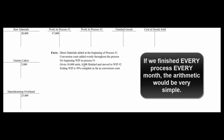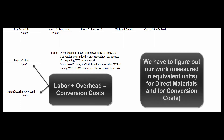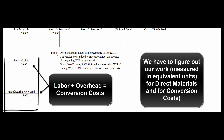As I often say, if we finished everything every month, the chapter on process costing would be one page. For example, if all 10,000 units got finished, we could tell management it cost $4.70 per unit — $47,000 divided by 10,000 units. But we don't finish everything every month, so we have to figure out exactly how much work we did. We look at it from two points of view: direct materials and conversion costs.